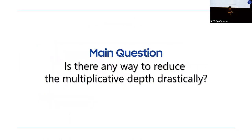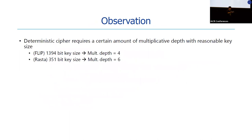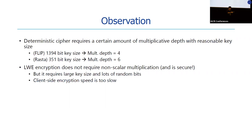One of the main questions is: is there any way to reduce the multiplicative depth drastically? For deterministic ciphers, there is a critical lower bound on multiplicative depth for every key size. In the case of FLIP, the key size is 1394 bits and multiplicative depth is 4. In the case of Rasta, the key size is 351 bits and multiplicative depth is 6. However, in the case of noisy encryption, we found that LWE encryption does not require non-scalar multiplication.